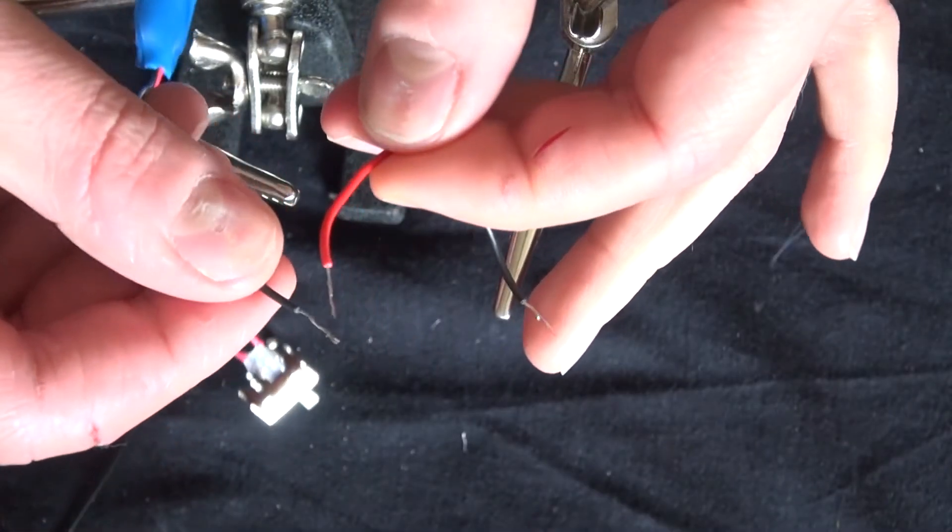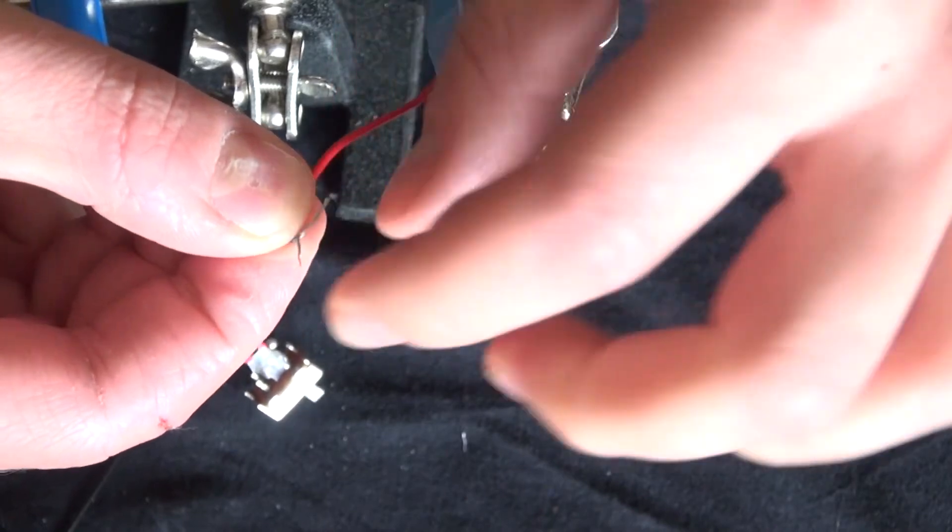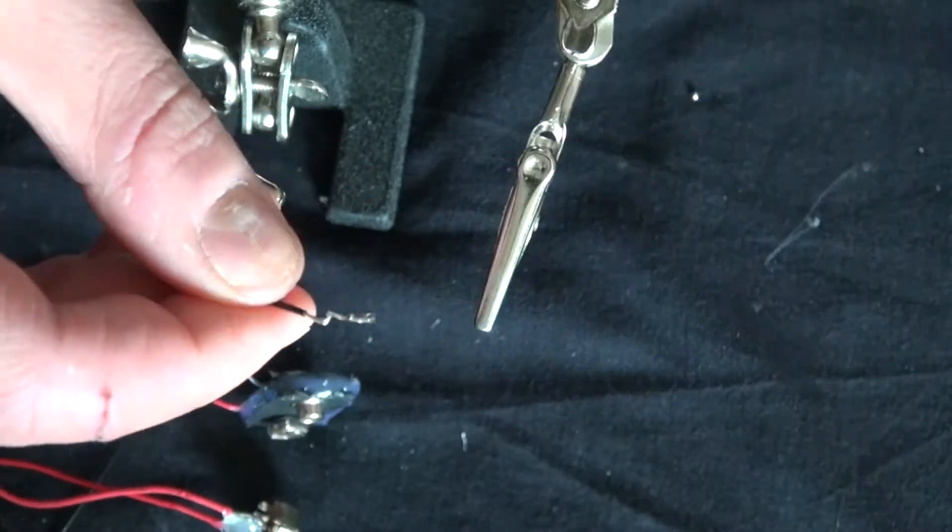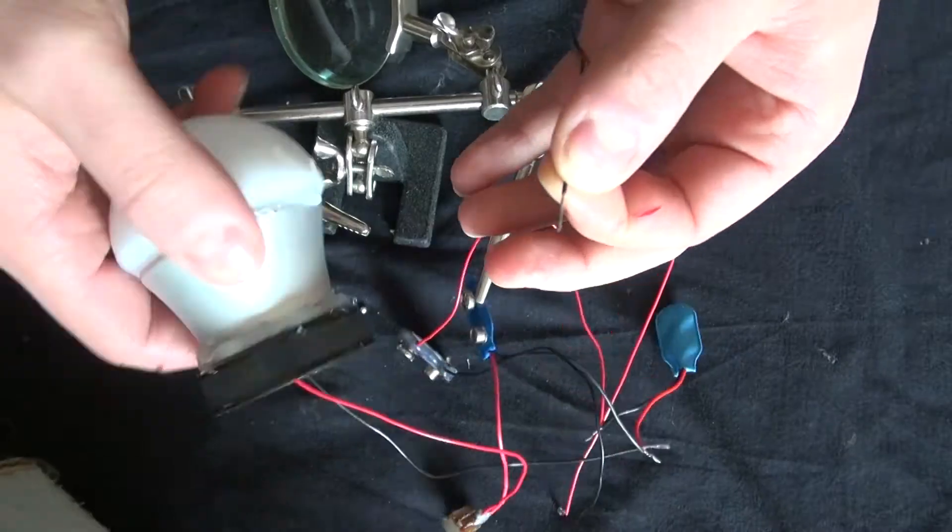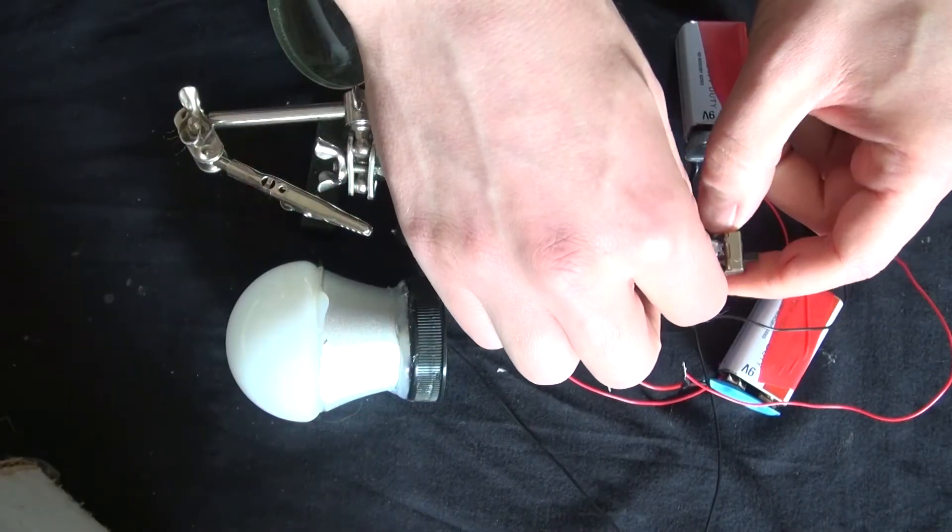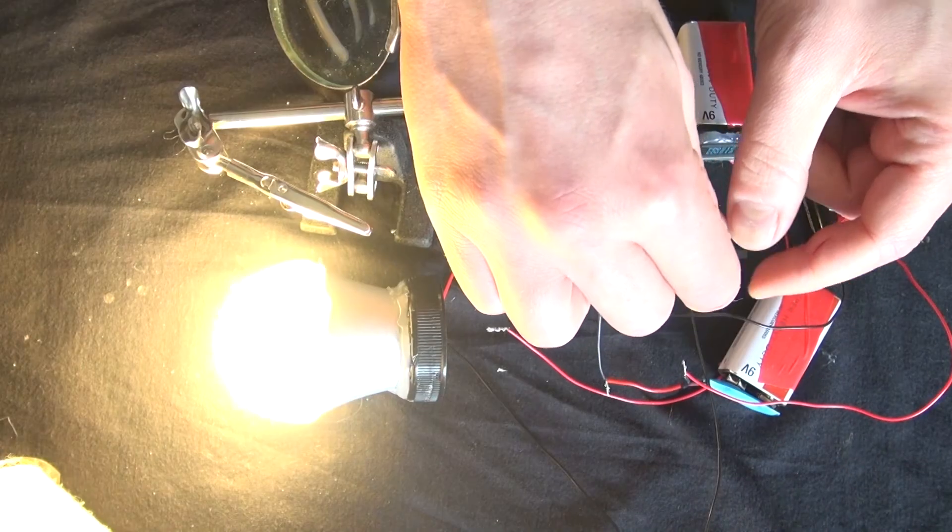And now to amplify the voltage you connect negative to positive, negative to positive, negative to positive. And this will allow you to increase the voltage by putting the nine volt batteries into series. And there we go.